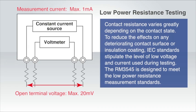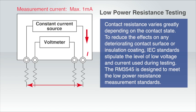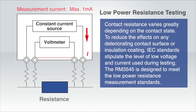The contact resistance of components used for signal contact varies greatly depending on the contact state. Because of this, the level of low voltage and current used for testing is stipulated by IEC standards so as to reduce the effects on any deteriorating contact surface or insulation coating. The RM3545 is designed to meet these low power resistance measurement standards.